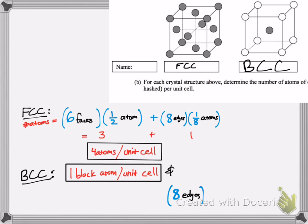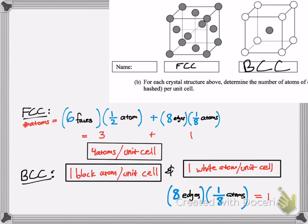There are eight edges, simple cubic, and like we said, an eighth of those atoms are shared, so that's one white atom. So there's one black atom and one white atom per unit cell. If it just asks how many total atoms, it would be two total, or two atoms per body-centered cubic unit cell.